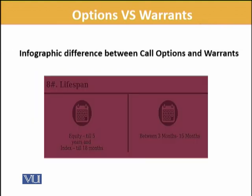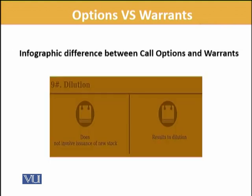Regarding lifespan, equity options go up to five years and index options up to eighteen months — though this is not a fixed rule. Warrants can generally go for a longer period as well. There are some overlapping areas between the two in this regard.